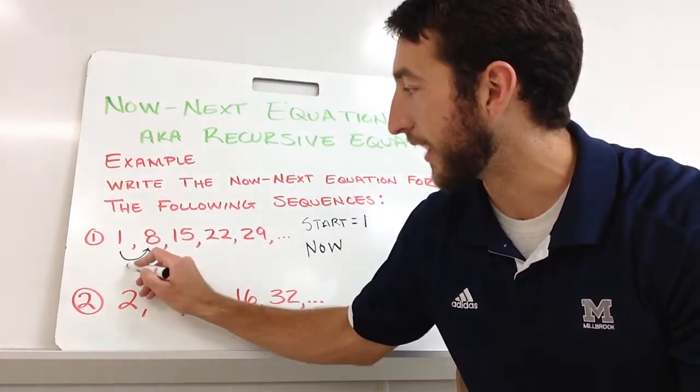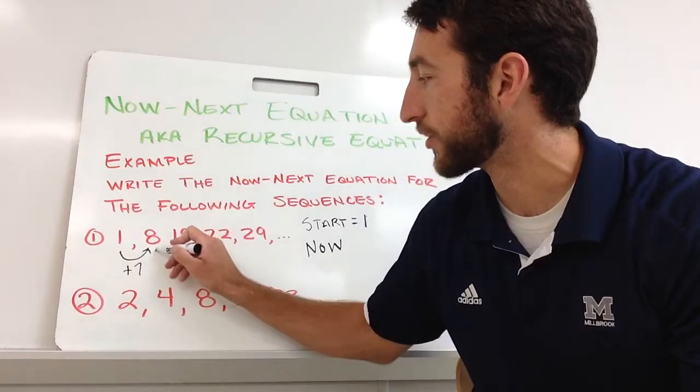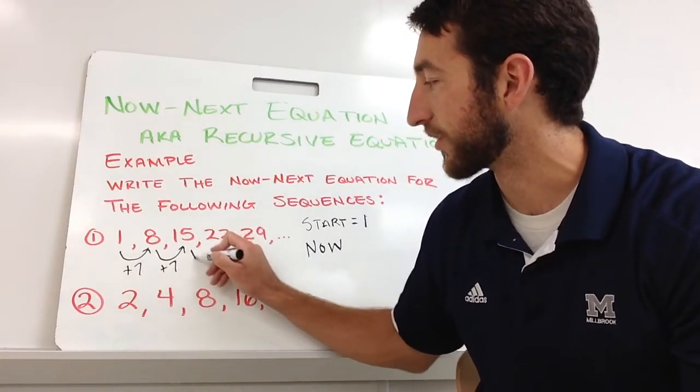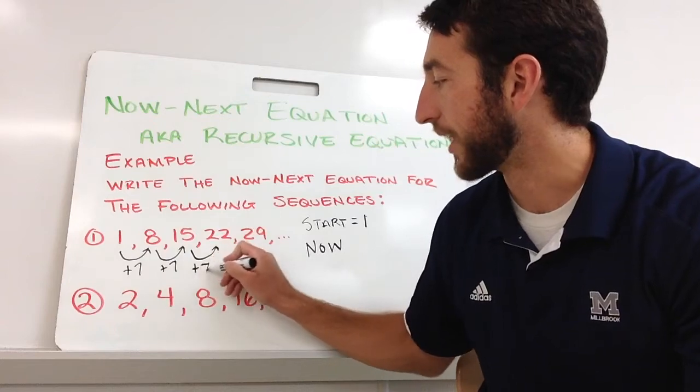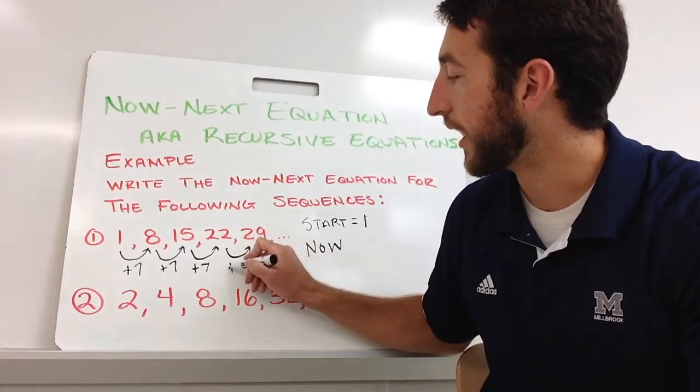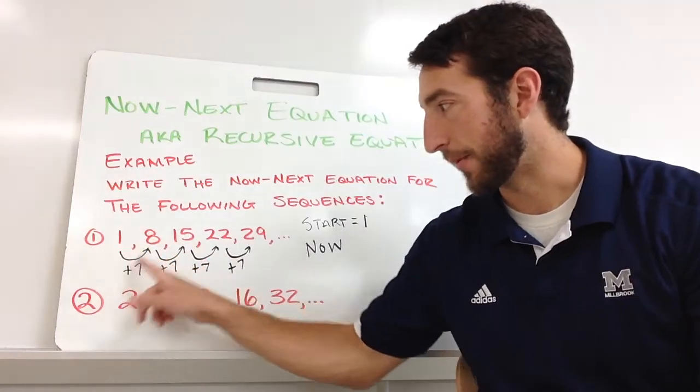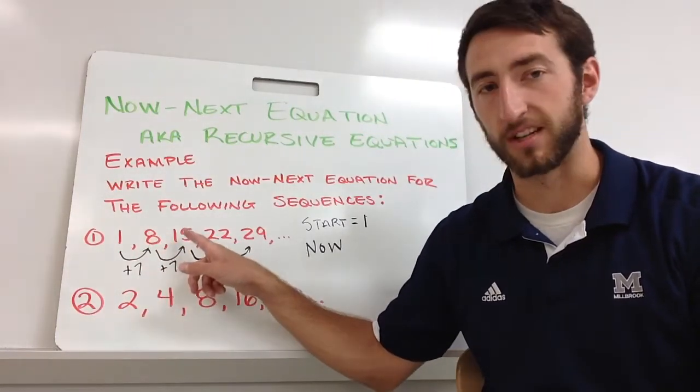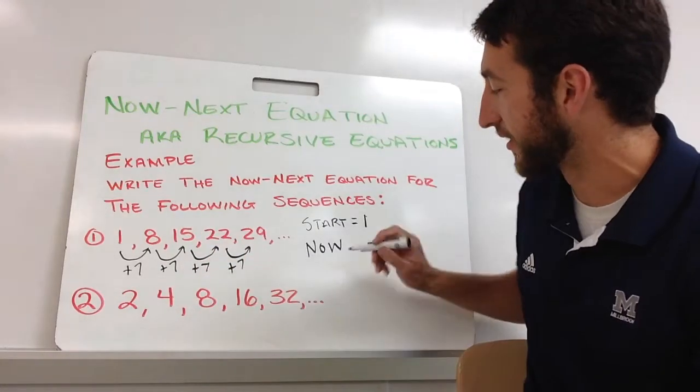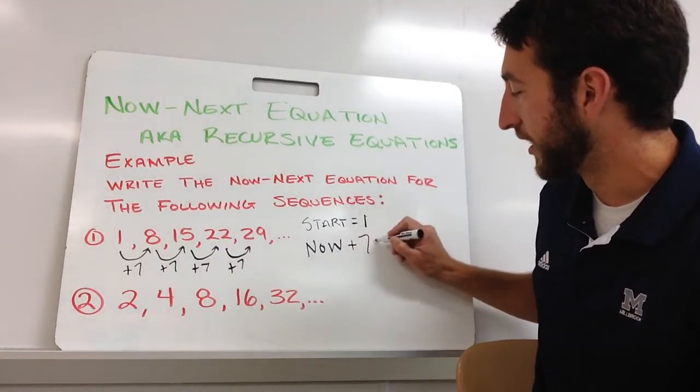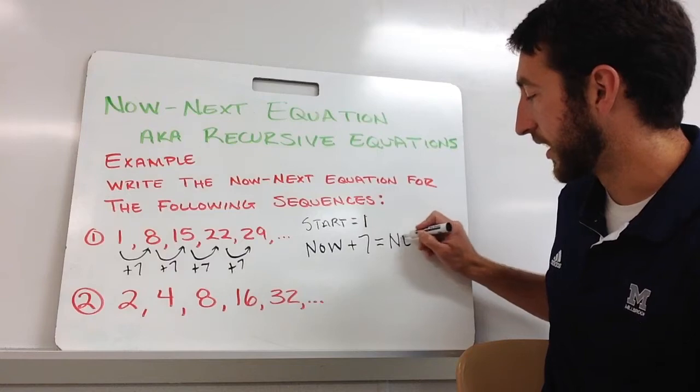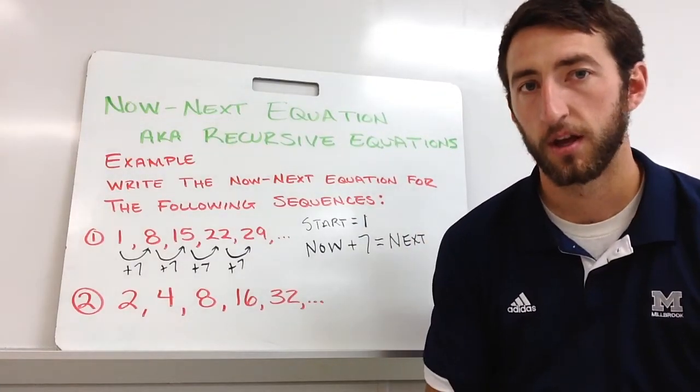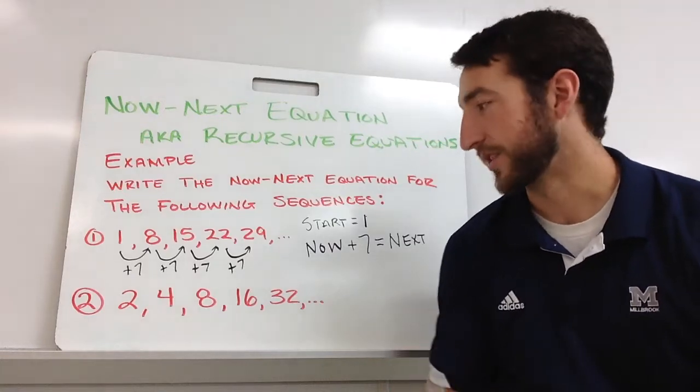What am I doing to get from that 1 to 8? It looks like we're going to add 7. So you want to check and make sure you're doing the same thing. 8 to 15, we add 7. I'm adding 7 each time. So I'm taking my now, adding 7 to get to the next number. The way that this looks is: now plus 7 equals next. You want to write the word out: now plus 7 equals next.